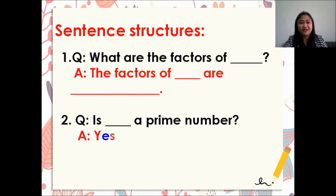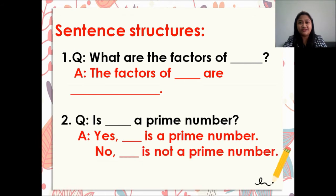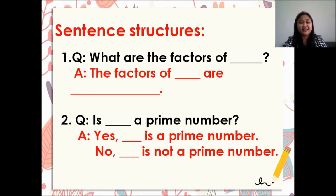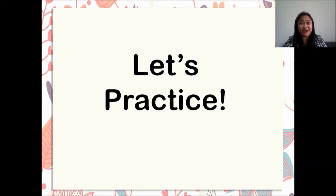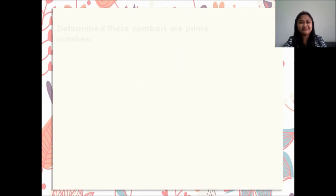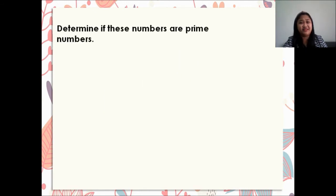Sentence structure number one — question: what are the factors of blank? And the answer is: the factors of blank are blank. Our second structure: is blank a prime number? The answer is: yes, blank is a prime number, or no, blank is not a prime number.